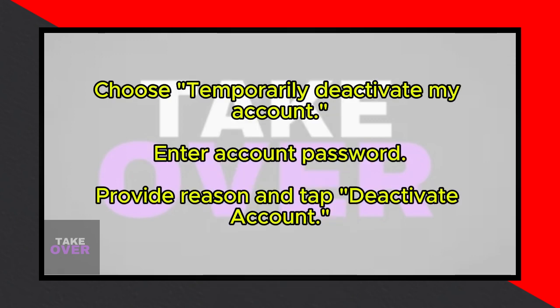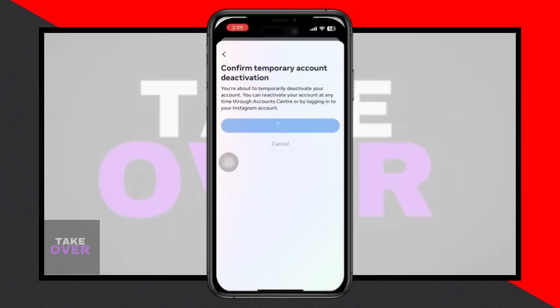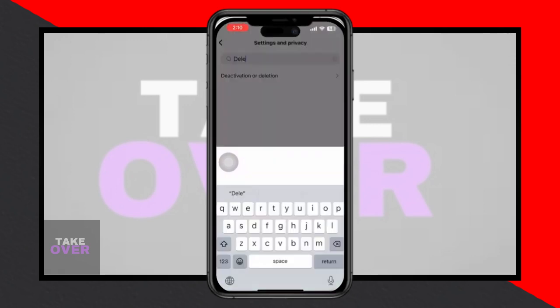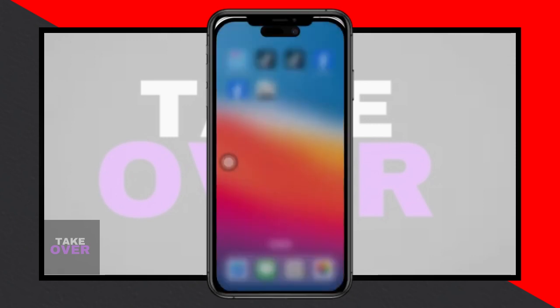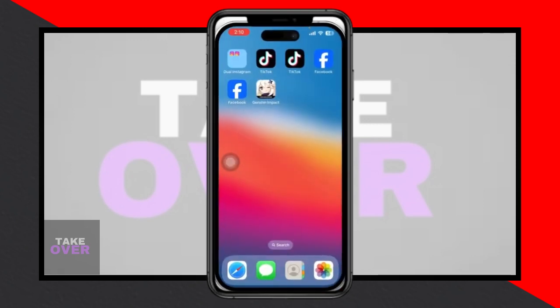You'll be prompted to enter your Instagram password for verification. After entering your password, you'll need to select a reason for deactivating your account. Once you've made your selection, tap on Deactivate Account, and that's it. Your Instagram account will now be temporarily deactivated, logging you out from your iPhone.